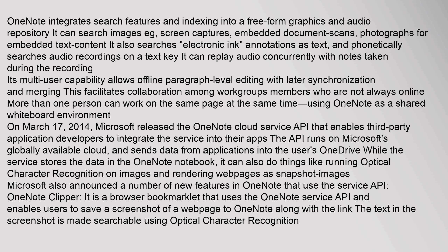On March 17, 2014, Microsoft released the OneNote Cloud Service API that enables third-party application developers to integrate the service into their apps. The API runs on Microsoft's globally available cloud and sends data from applications into the user's OneDrive, while the service stores the data in the OneNote notebook. It can also do things like running optical character recognition on images and rendering webpages as snapshot images. Microsoft also announced a number of new features in OneNote that use the service API.